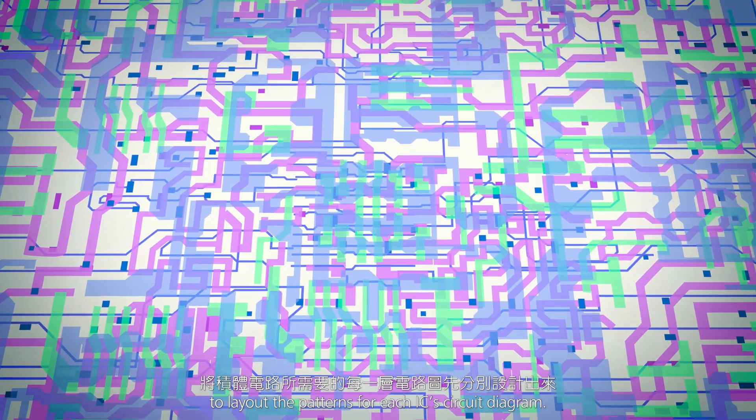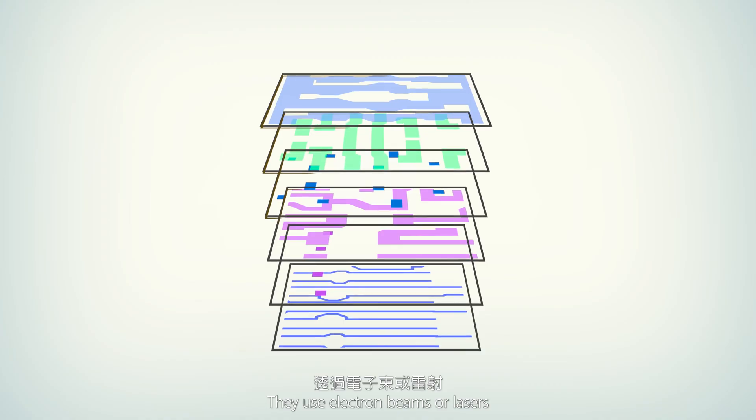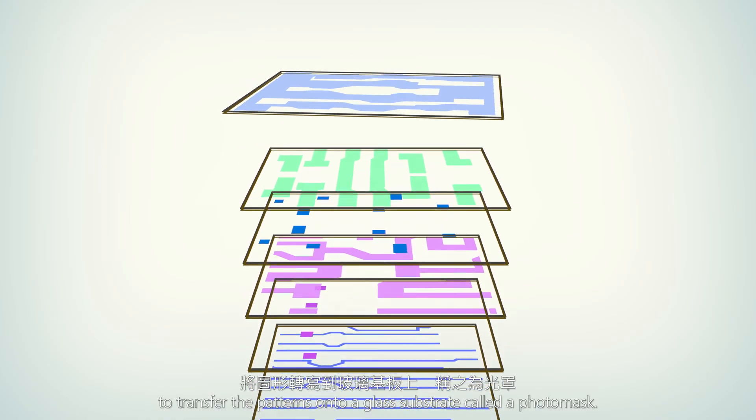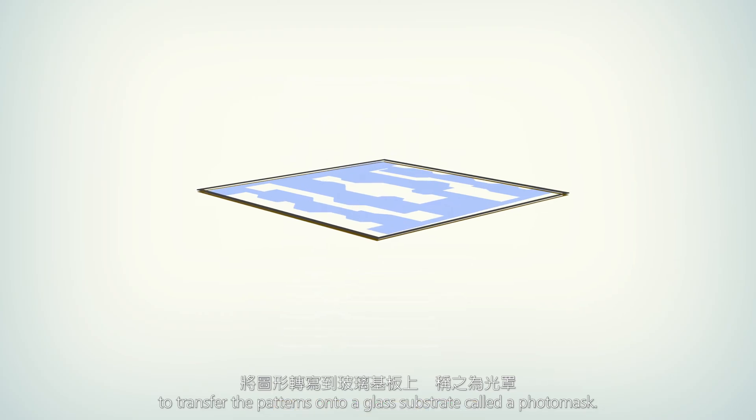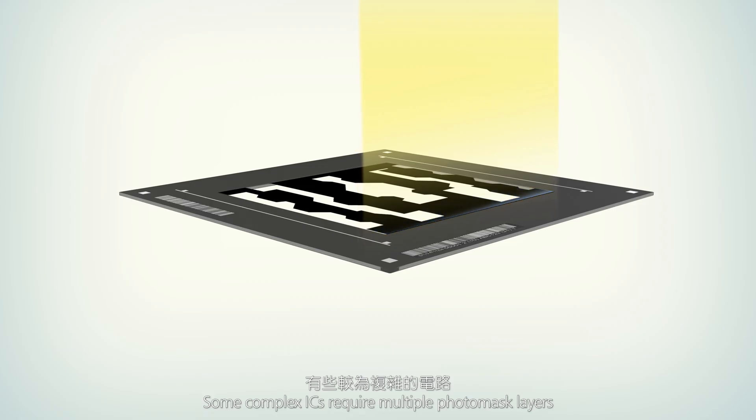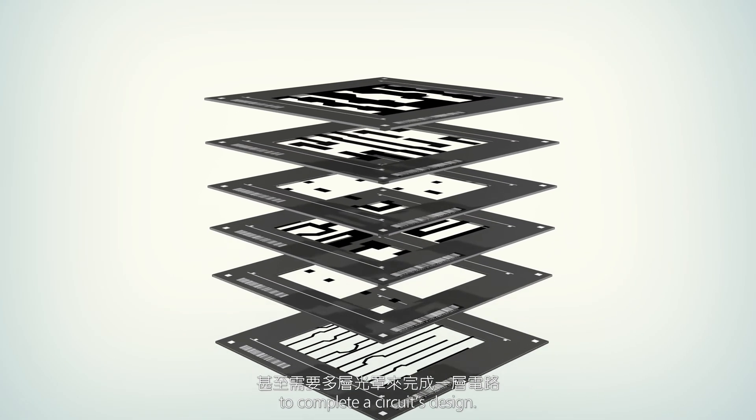To start, IC design engineers use a computer-aided design system to lay out the patterns for each IC's circuit diagram. They use electron beams or lasers to transfer the patterns onto a glass substrate called a photomask.